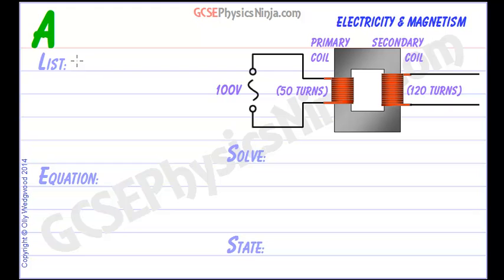What do we know to start with? On the primary side, let's put a P there for primary, we know that the number of turns NP is equal to 50, and the primary voltage is 100V.